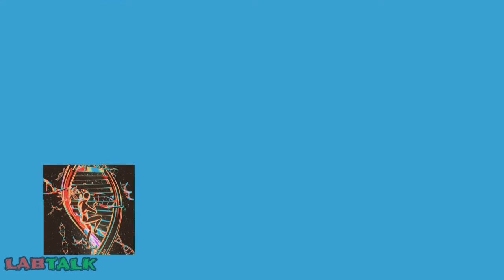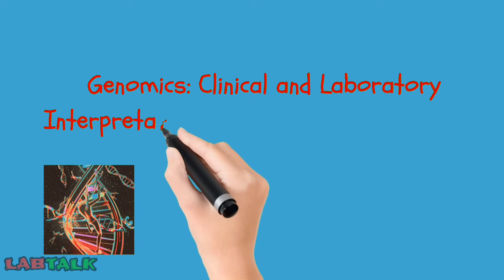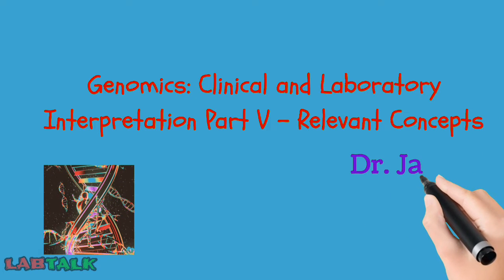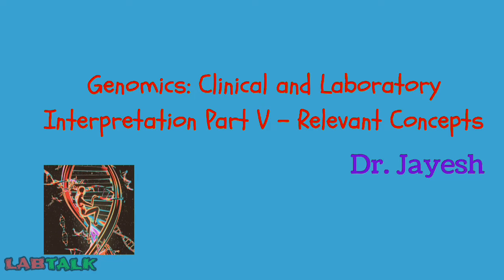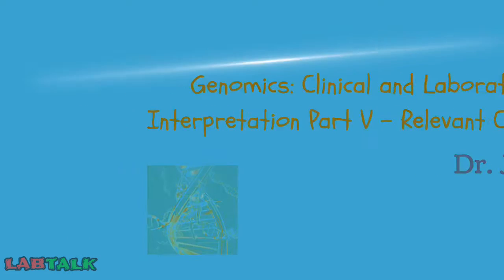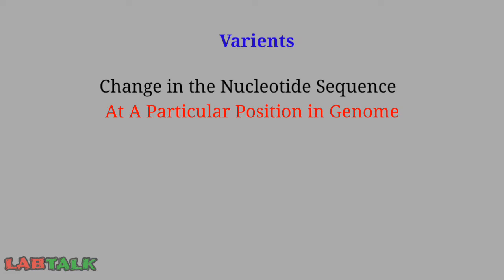Welcome back to this video series on genomics laboratory and clinical interpretation. Before going into the details of genomics, let us discuss some concepts we are going to use during this series. A variant is a change in the nucleotide sequence at a particular position in the genome, compared to the genome assembly or genome build being used as a reference by the laboratory.